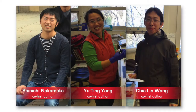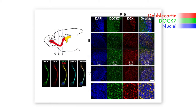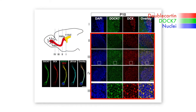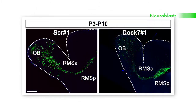Van Aelst and colleagues, including co-first authors Shinichi Nakamuta, Yu Ting Yang, and Chia Lin Wang, found that DOCK7 was expressed in neuroblasts present in the ventricular subventricular zone and rostral migratory stream of postnatal and adult mice. They discovered that DOCK7 is not required for the genesis of those neurons, but is important for their migration to the olfactory bulb, because if you deplete DOCK7, they get largely stuck on the rostral migratory stream.